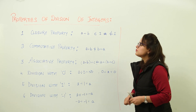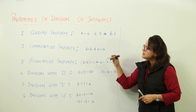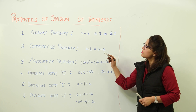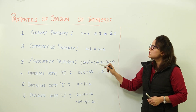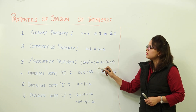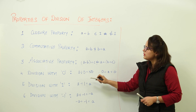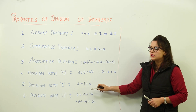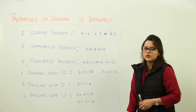Properties of division of integers. The properties are: closure property, commutative property, associative property, division with 0, division with 1, and division with minus 1.